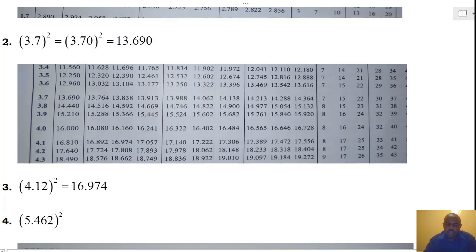Second example, we consider 3.7. Again, just like 1.1, 3.7 has only two digits. The position for the third digit, again we put a zero. Now, we go to our tables. Under x, we locate 3.7.